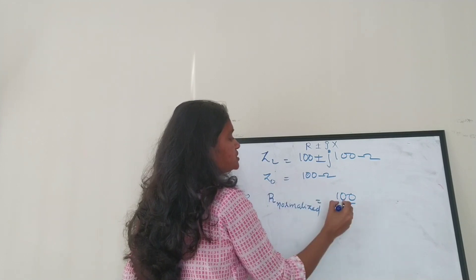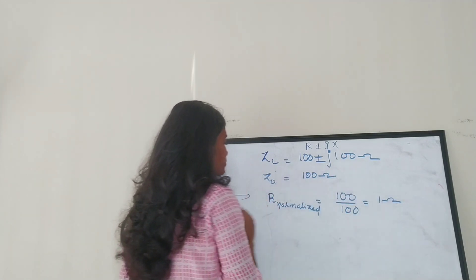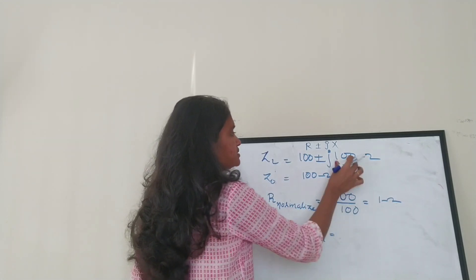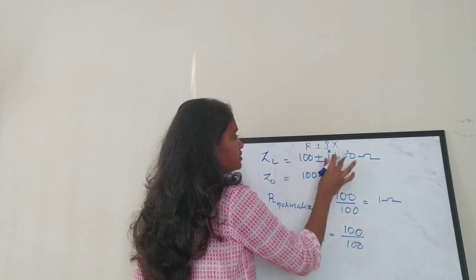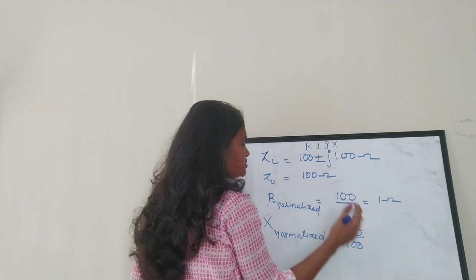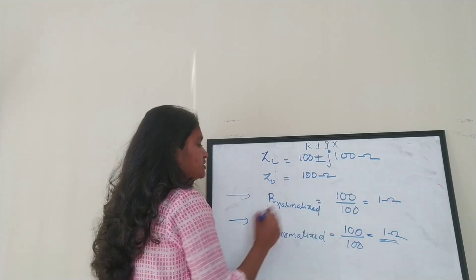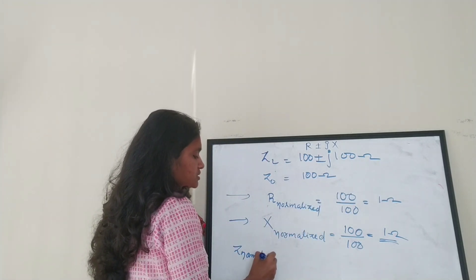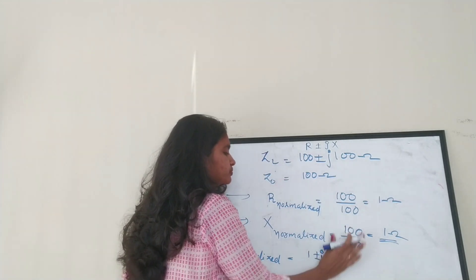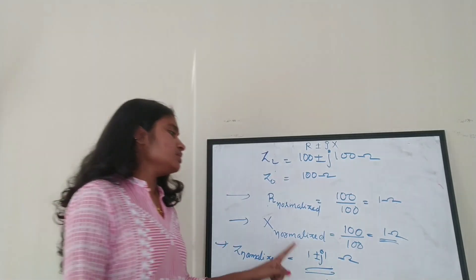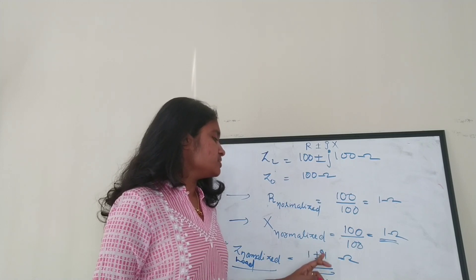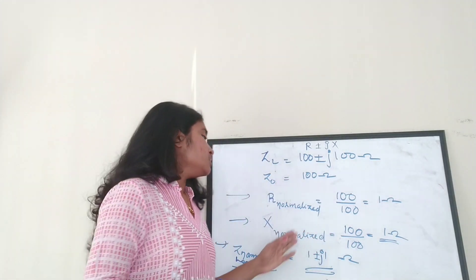We are going to plot Z = 100 ± j100 Ω with Z₀ = 100 Ω. The normalized resistance is R_norm = 100 / 100 = 1. The normalized reactance is X_norm = 100 / 100 = 1. So the normalized load impedance is Z_load_norm = 1 ± j1.